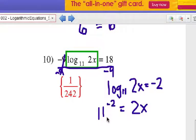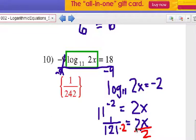Alright, that means eleven to the negative two power equals two x. Eleven to the negative two power is one over eleven squared, which is 121, right? Equals two x. And the next step, a little bit tricky. We're going to divide each side by two, because we want x by itself.